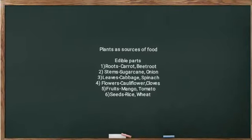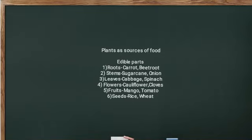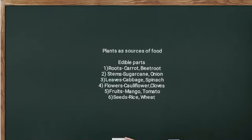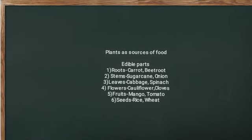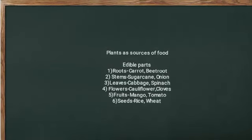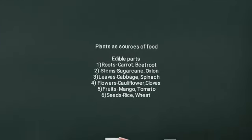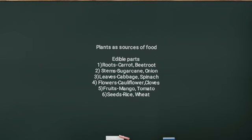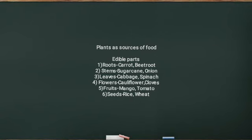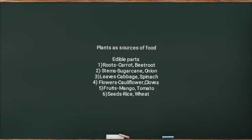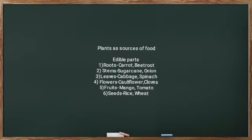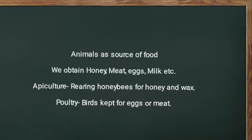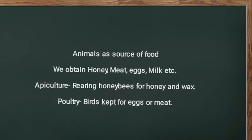Plants as source of food. Here we consider the edible parts of plants which can be used as food. The examples are: roots — carrot; stem — onion; leaves — cabbage; flowers — cauliflower; fruits — mango; seeds — rice.